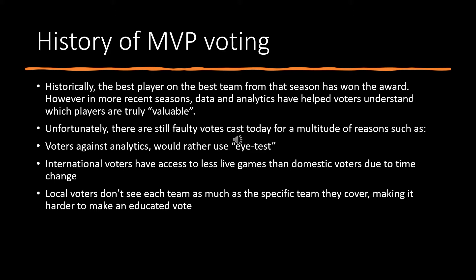Unfortunately, there are still faulty votes cast today for a multitude of reasons, such as voters against analytics who would rather use what they call the eye test. They believe that when they watch a player, they know who's really good and who isn't, regardless of what the numbers say. These are often voters who voted before the NBA shifted to using analytics. Additionally, international voters have access to fewer live games than domestic voters due to the time difference. And local beat reporters who have votes only watch the team they write about and don't get to see other teams.